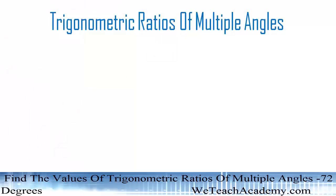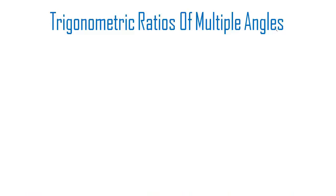Hello guys, welcome to VTCH Academy. Today's topic is Trigonometric Ratios of Multiple Angles. In this section we are going to derive the value for sine and cosine for the angle 72 degrees.